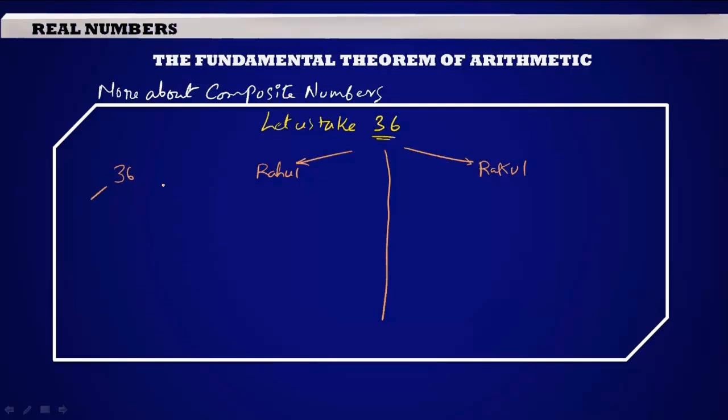Let us observe the ways that they are writing the factors for the number 36. Rahul took 2 × 18 = 36, whereas Rakul has taken 3 × 12 = 36. Now Rahul took 3 × 6 = 18, whereas Rakul took 2 × 6 = 12. Rahul took 2 × 3 = 6, Rakul took 3 × 2 = 6. Let us write the factors found: Rahul found 2 × 3 × 2 × 3 = 36, whereas Rakul found 3 × 2 × 2 × 3 = 36.